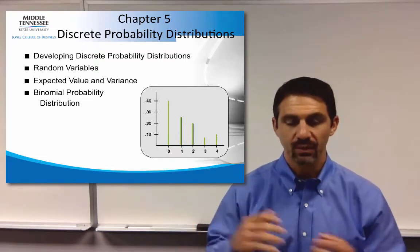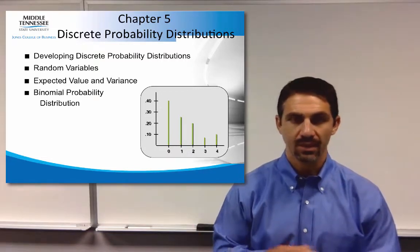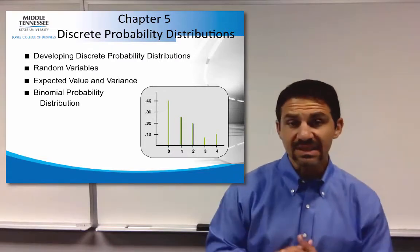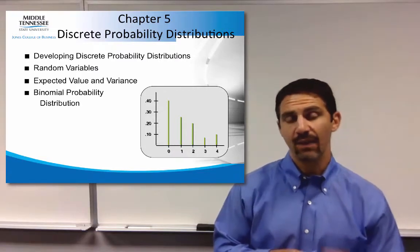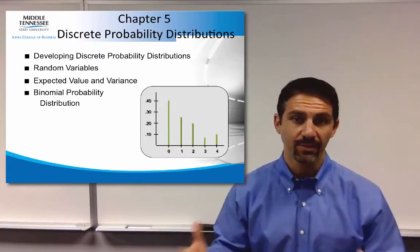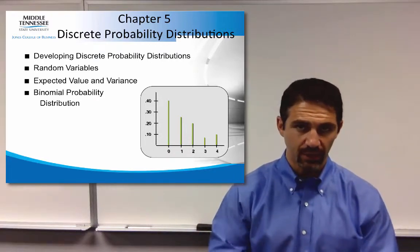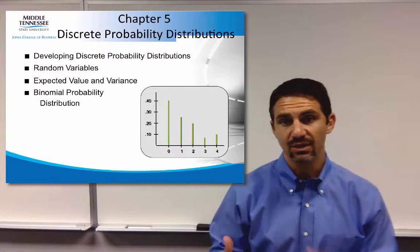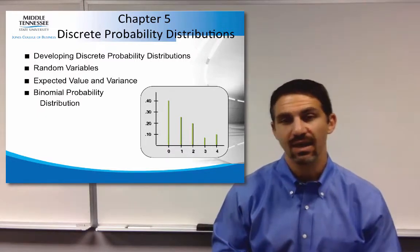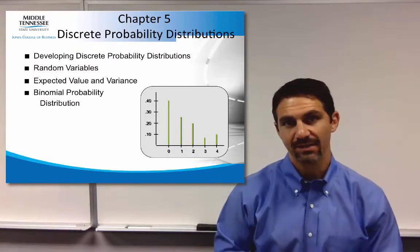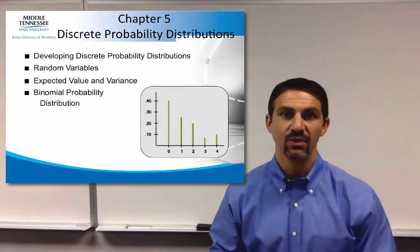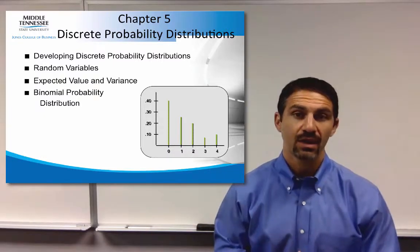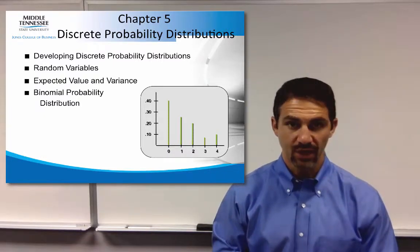For example, we talk about the number of TVs sold in a day, it would have to be 1, 2, 3, an actual discrete value or integer. But if we're talking about dollars, now we're talking about continuous data because it has a decimal place. If it has a decimal place, it's continuous. If it is an integer, then we're talking about discrete.